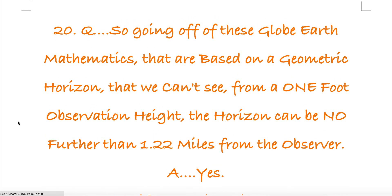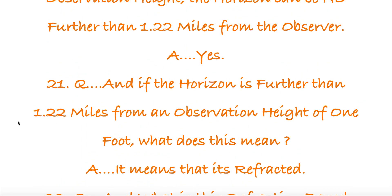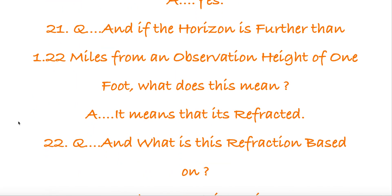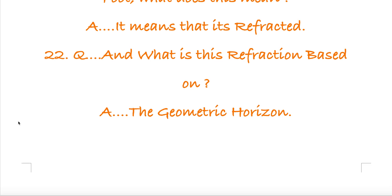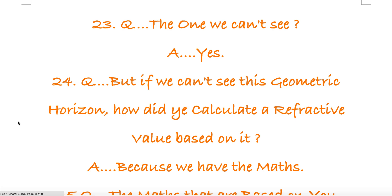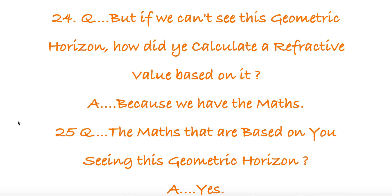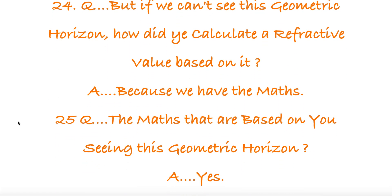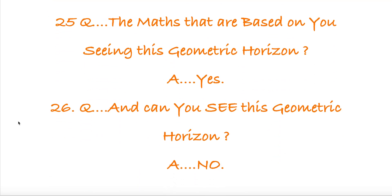So going off these globe mathematics that are based on a geometric horizon we can't see, from a one-foot observation height the horizon can be no further than 1.2 miles from the observer. And if the horizon is further than 1.2 miles from an observation height of one foot, what does this mean? It means that it's refracted. And what is this refraction based on? The geometric horizon — the one we can't see. But if we can't see this geometric horizon, how do they calculate a refractive value based on it? Because we have the maths. But the maths are based on you seeing this geometric horizon. Yes. And can you see this geometric horizon? No.